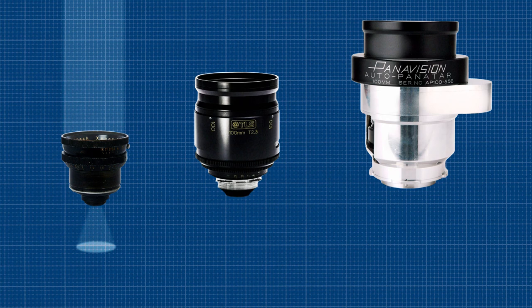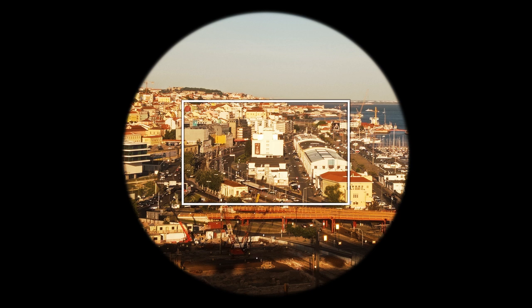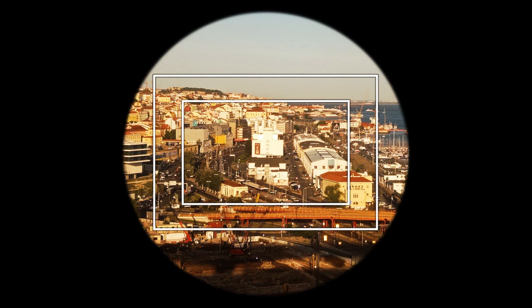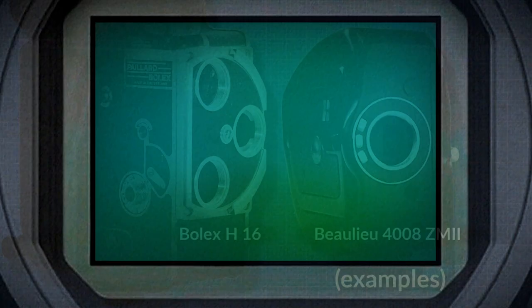Each lens is tailored to a particular image size and forms an image circle. It has a specific size that covers a certain image area. You can use a lens with a smaller image size, but not with a larger one since vignetting occurs. You need to make sure any interchangeable lens covers the entire image area.